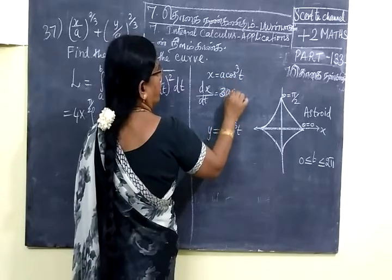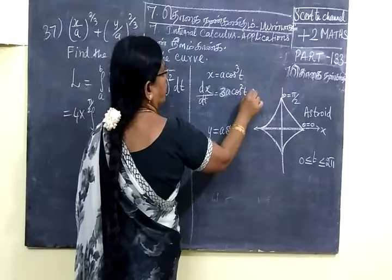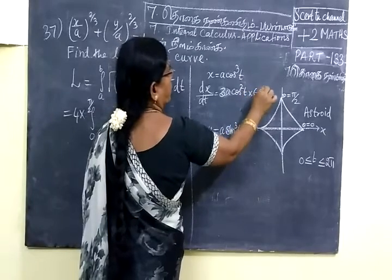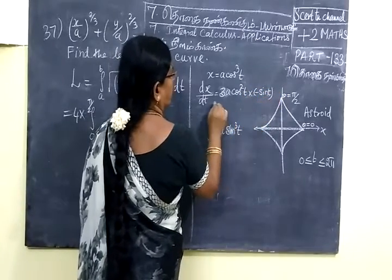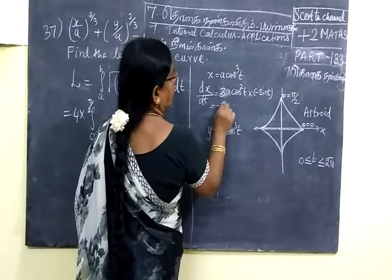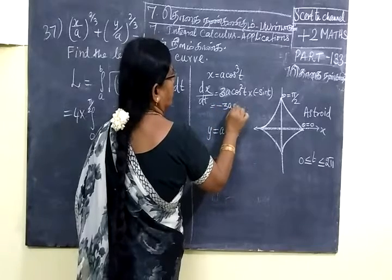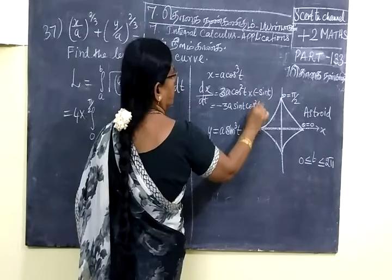3a cos² t into inner function minus sin t. So minus 3a sin t cos² t.